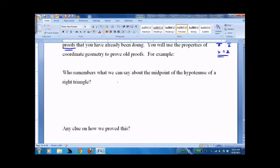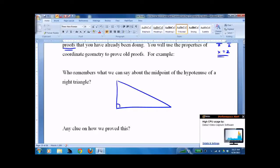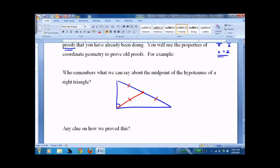First things first, what can you say about the midpoint of the hypotenuse of a right triangle? And I'm hoping you remember that it breaks into three pieces that are all congruent. So how do we prove this? Well, we said it's just half a rectangle. We know that the diagonals bisect each other. Therefore, it works.